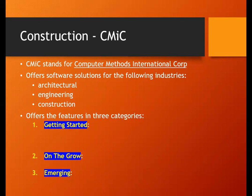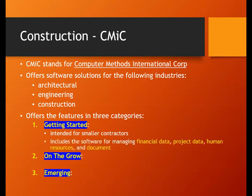There are three different versions: Getting Started, On the Grow, and Emerging — think of them as basic, intermediate, and full-featured. Getting Started is intended only for small contractors who want to manage their construction activities on the cloud, getting features for managing all financial data, entire project data, and human resources — how many people are needed, what type, and documentation of all these things.